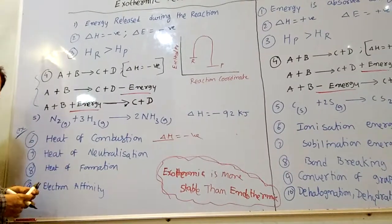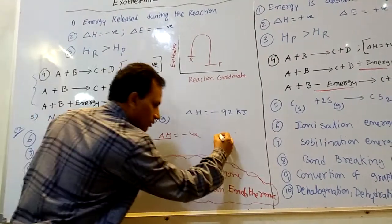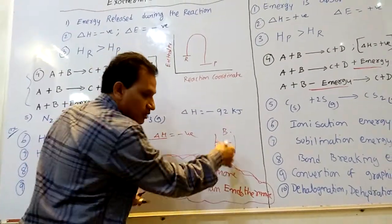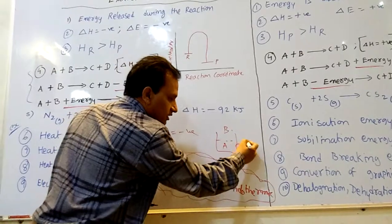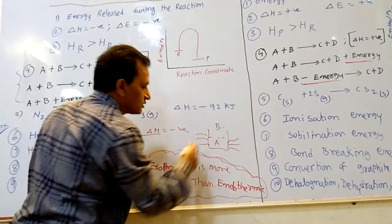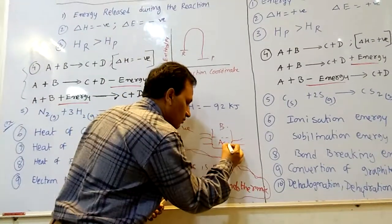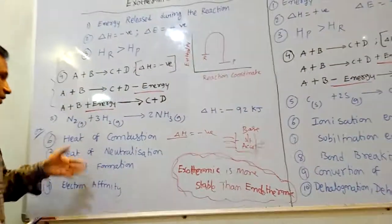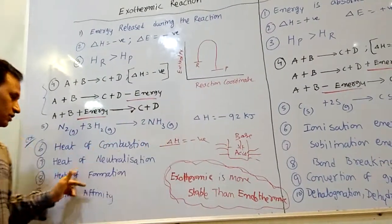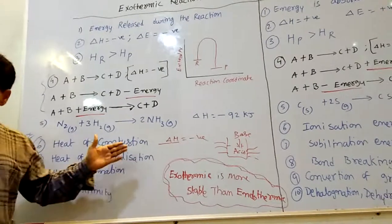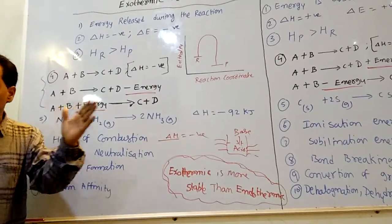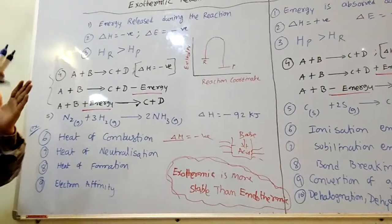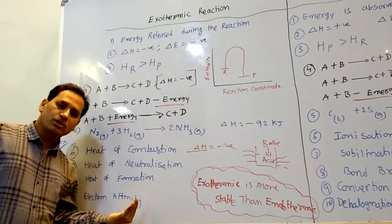Heat of formation and heat of neutralization are also exothermic. When acid and base are combined, they form a neutral product and heat is released to the surroundings — so heat of neutralization is always exothermic. When molecules A and B form together, energy is released — so heat of formation is exothermic, though sometimes it may be endothermic. Electron affinity is the amount of energy released when adding an electron to an atom — so electron affinity is exothermic.